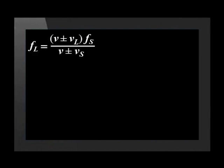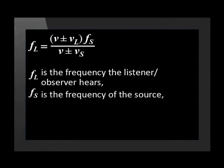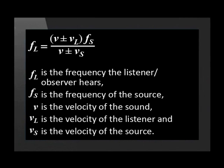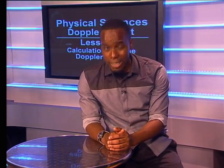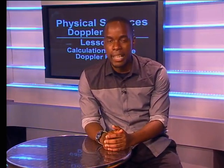First, here is the Doppler effect equation, where FL is the frequency of the listener or observer, FS is the frequency of the source, V is the velocity of the sound, VL is the velocity of the listener, and VS is the velocity of the source. Sometimes the subscript L for listener is used and sometimes it is O for observer. Let's explain each symbol with an illustration.